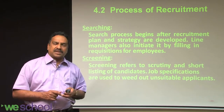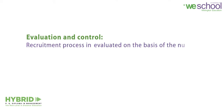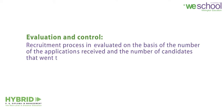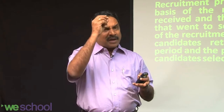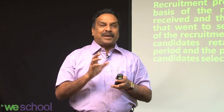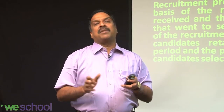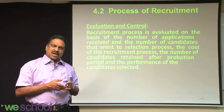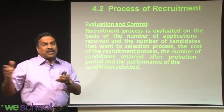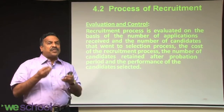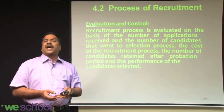Evaluation and control: the recruitment process is evaluated based on the number of applications received and the number of candidates that proceed to selection. If communication is unclear, far more applications than expected may come in — instead of 1000, you might receive 5000. That is poor recruitment. If 1000 applications come in and 800 go to selection, that is a very good signal.